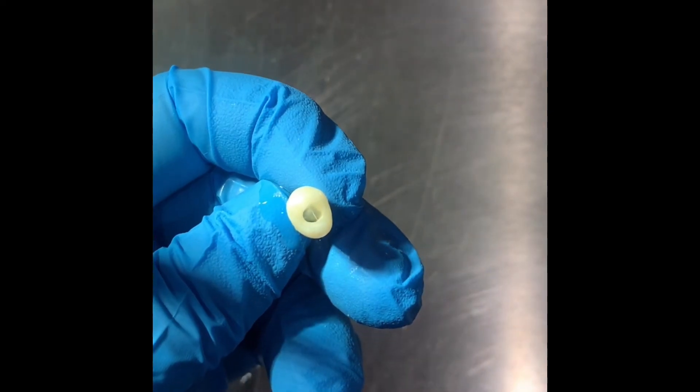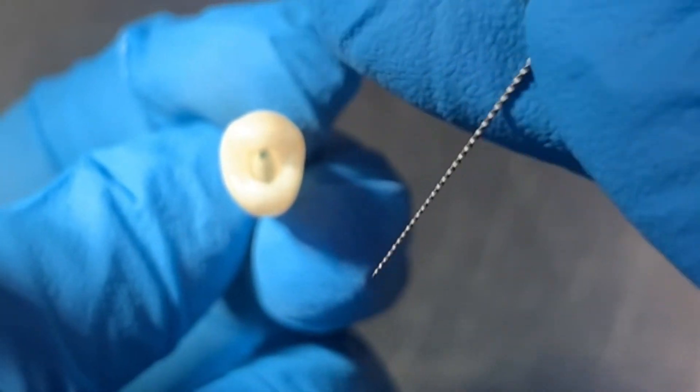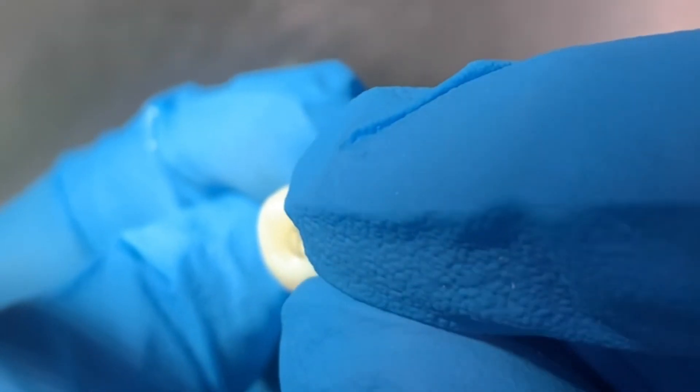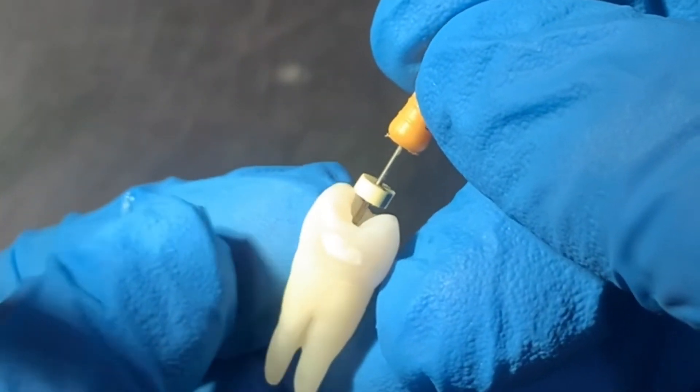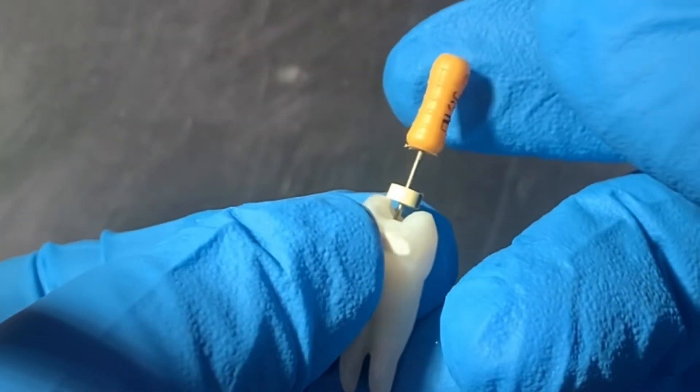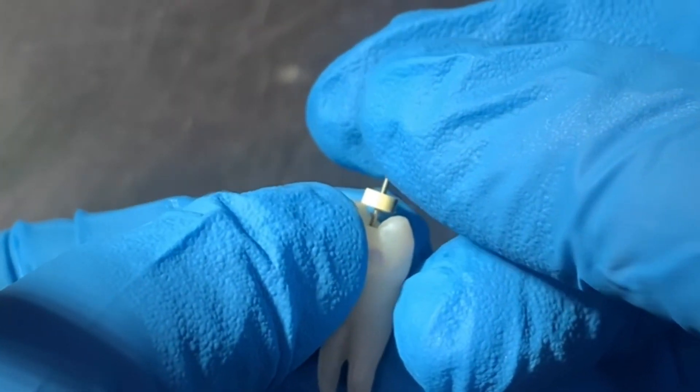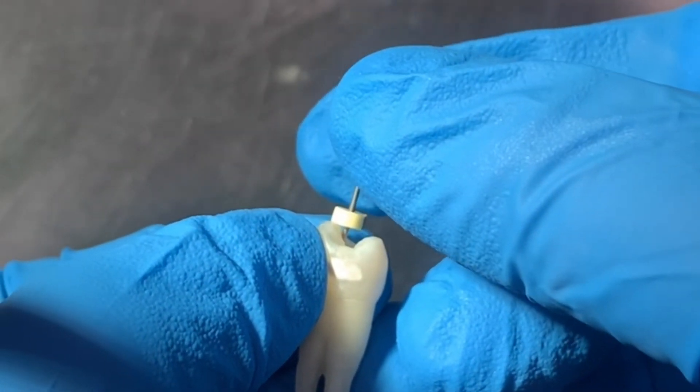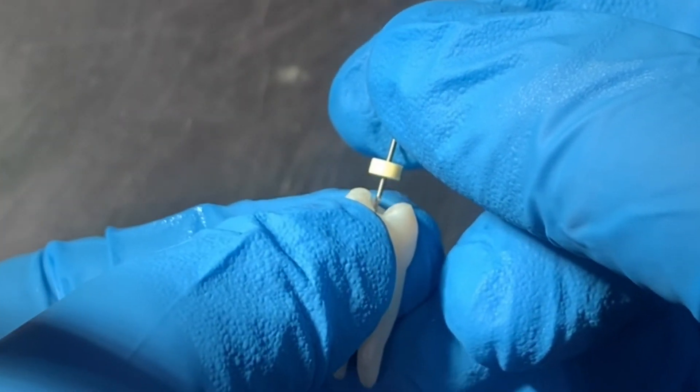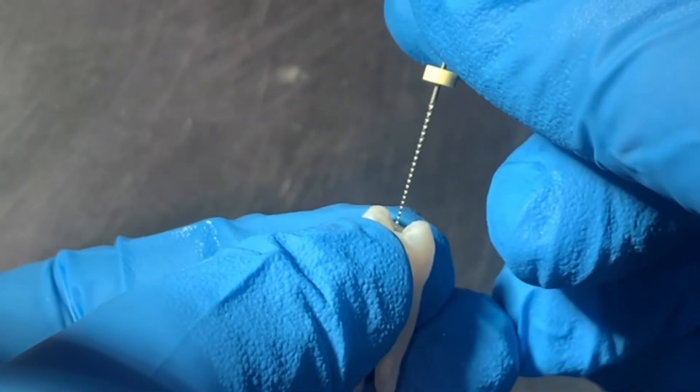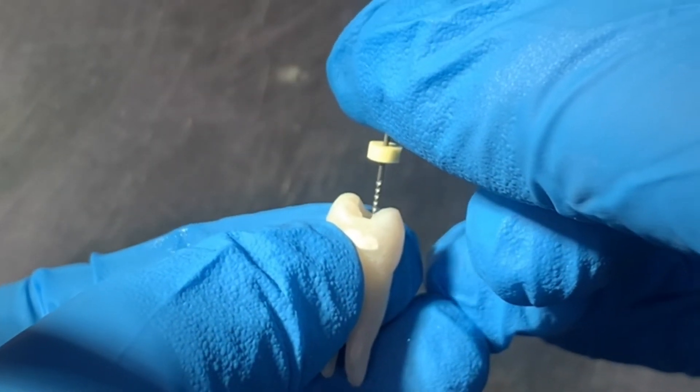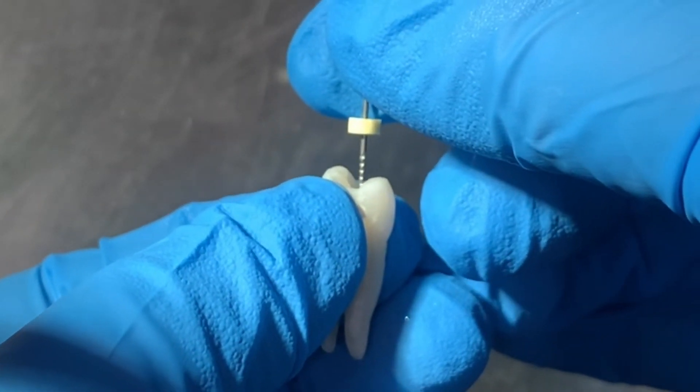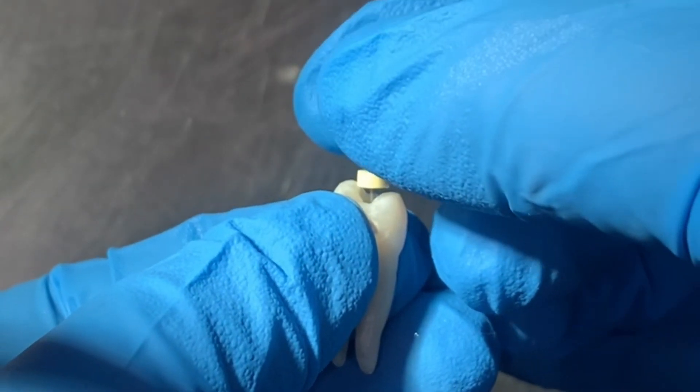Now how do we check if our apical preparation is complete or not? We take a 20 number file and place it in the buccal canal. We carry it full length till the apex and check whether it is tightly fit or loose fit. On pulling out like this, we observe that it is tightly fit. Let's try the other canal. In the lingual canal we go till the working length and as we pull out there is some resistance, so it is tightly fit.